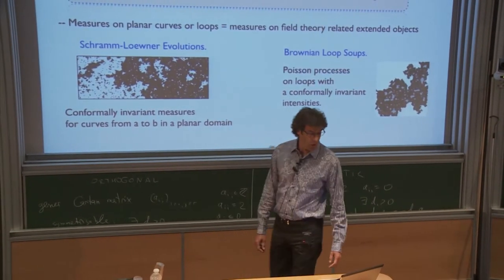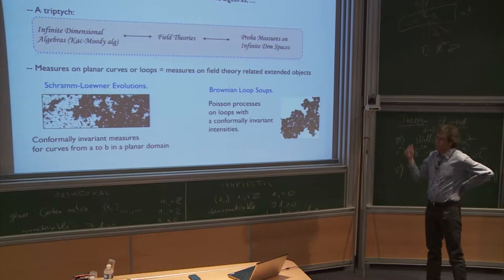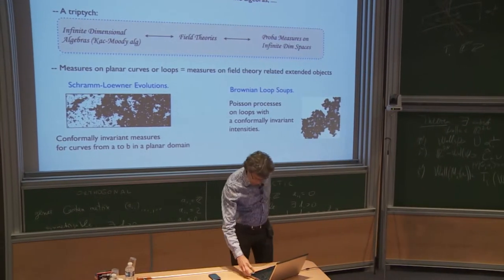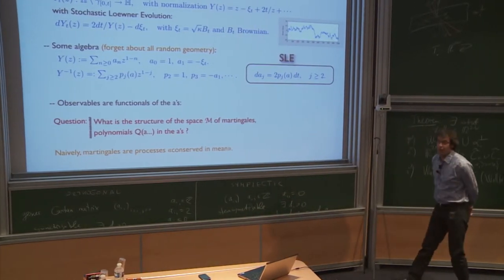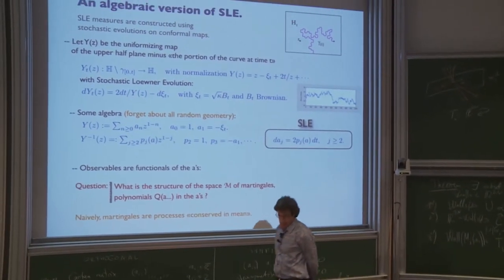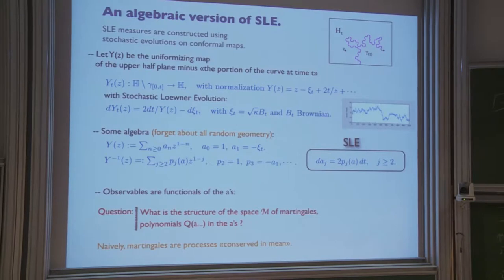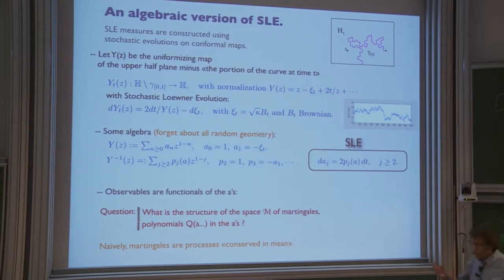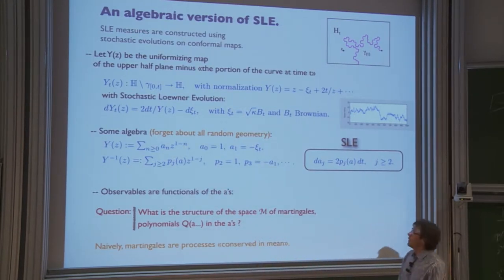What I want to explain is some algebraic property linked to Virasoro algebra and these measures. I have to tell you what SLE is. Since the aim of today is just to play with some algebra, I will more or less forget all about the random geometrical aspect of SLE — which is probably not a good idea, but that will be the rule of the game today. The way SLE works is to define the measure on the curve by walking along the curve and trying to decipher the property of the curve as you walk along it. You code the curve by some conformal map.